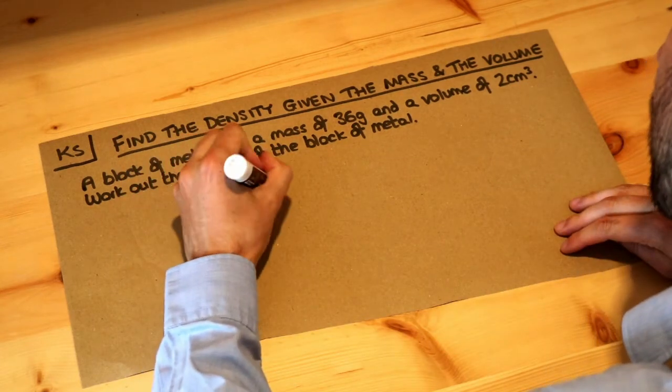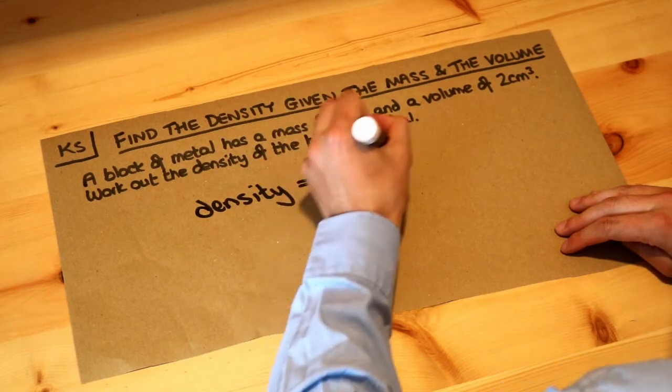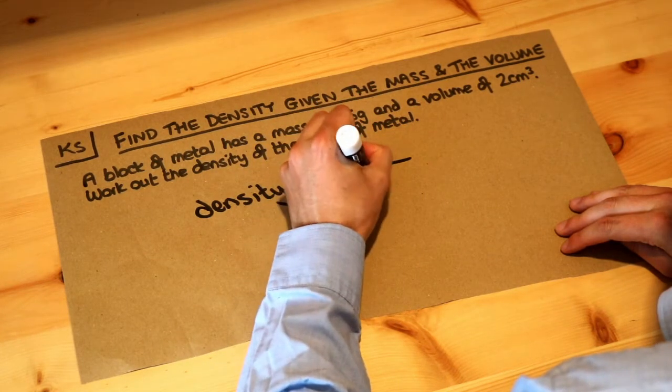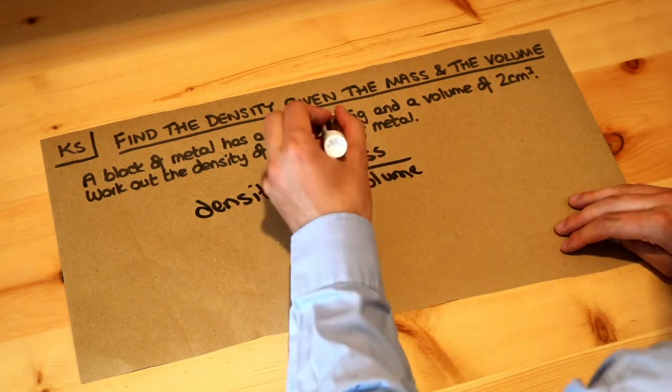Density is equal to the mass, so that's how much matter something is made up of, divided by the volume. So let's use that formula using this information here.